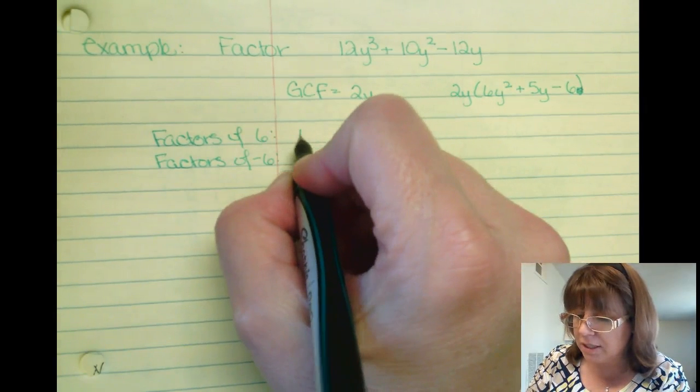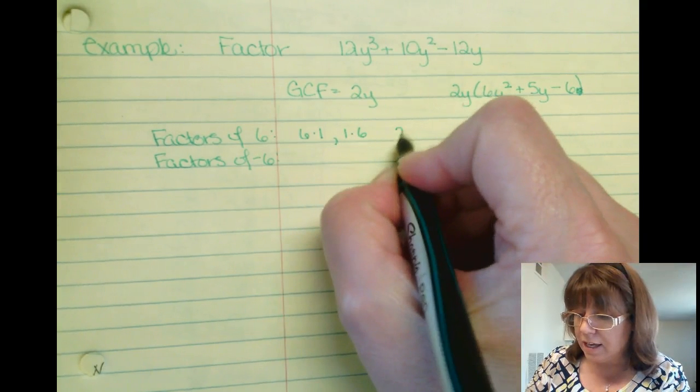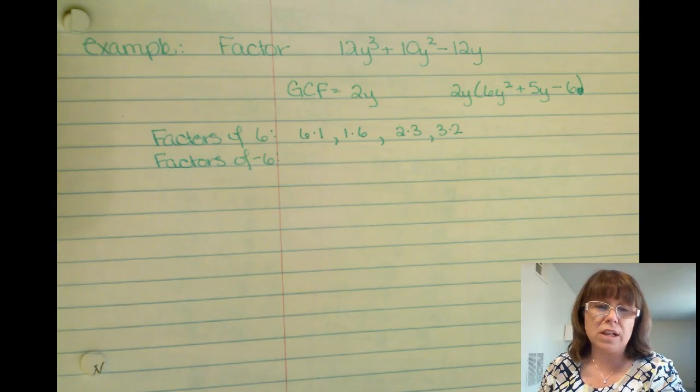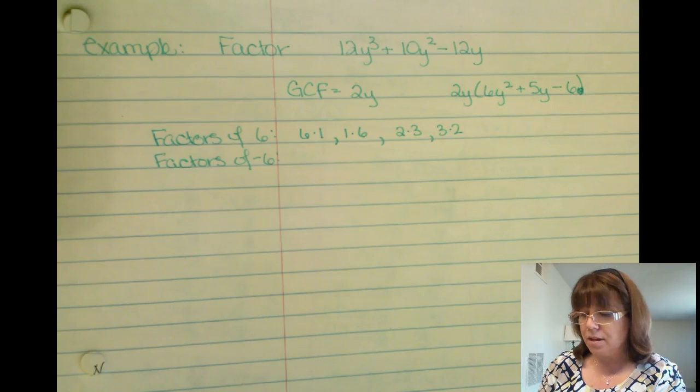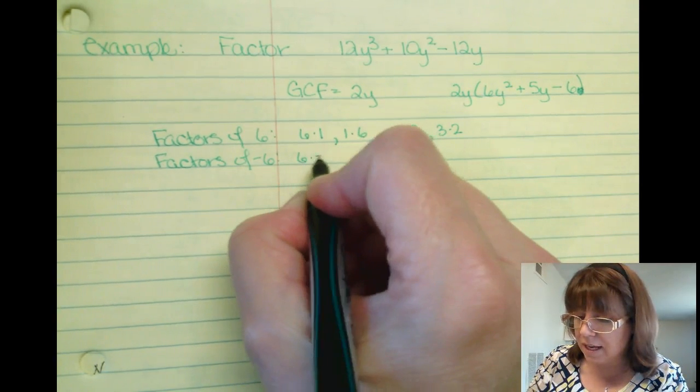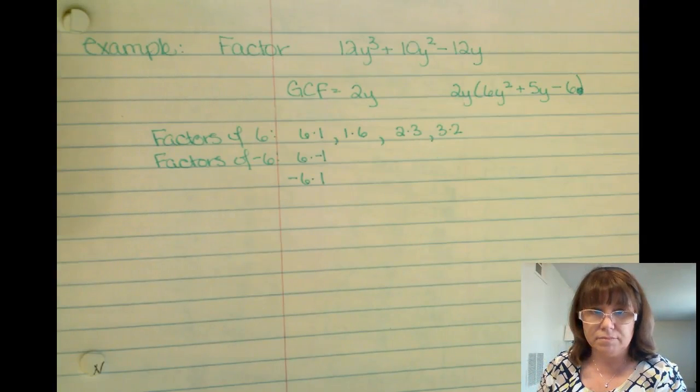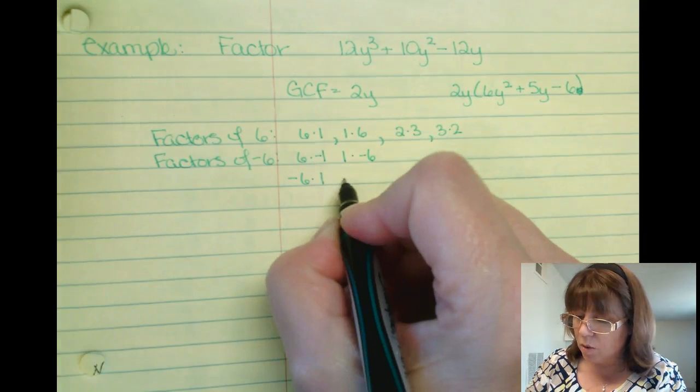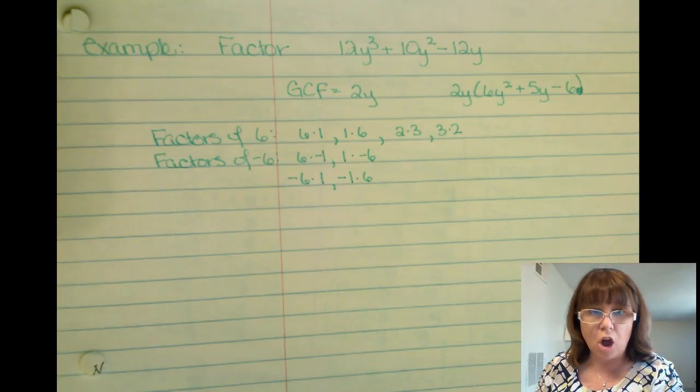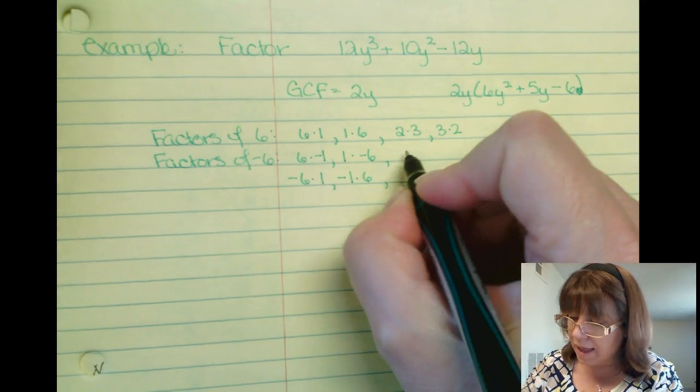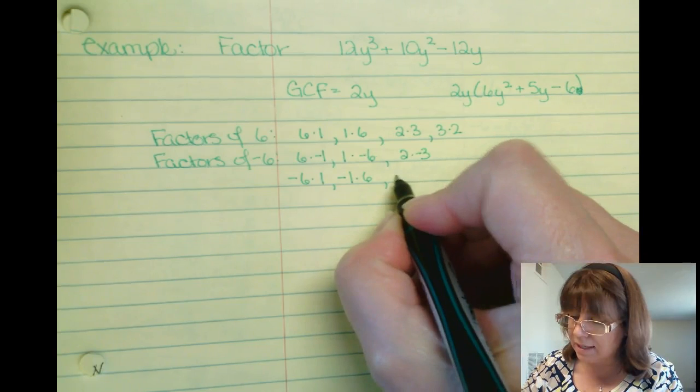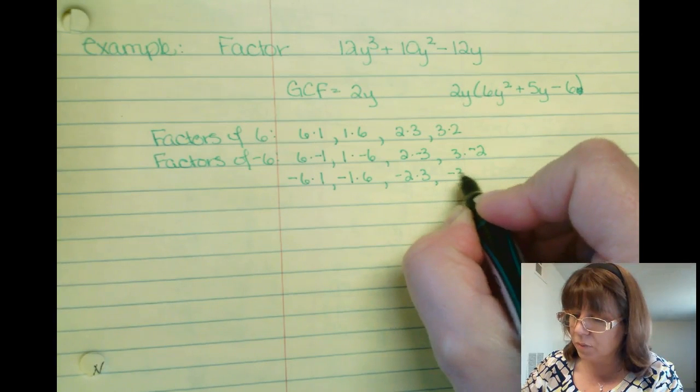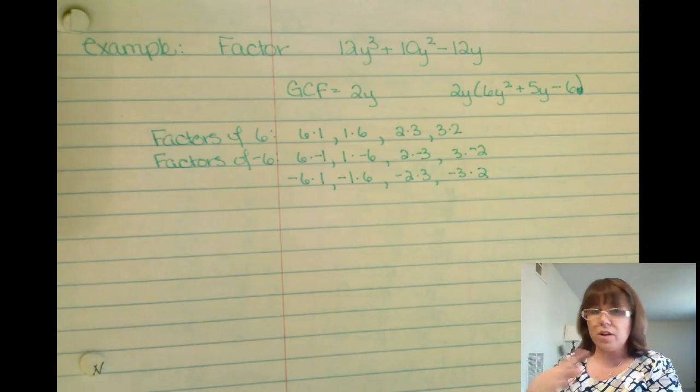Factors of 6 and the factors of negative 6. 6 is my first term's coefficient. Negative 6 is my last term's coefficient. So the factors of 6 are going to be 6 times 1, or 1 times 6, 2 times 3, or 3 times 2. Those are all my available factors of 6, as well as the order of the factors. For negative 6, I have 6 times negative 1, or negative 6 times positive 1. I have 1 times negative 6, or negative 1 times 6. I have 2 times negative 3, as well as negative 2 times 3, as well as 3 times negative 2, as well as negative 3 times 2. Those are all the orders, all the combinations of all the factors.